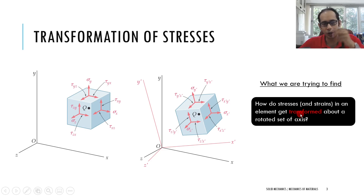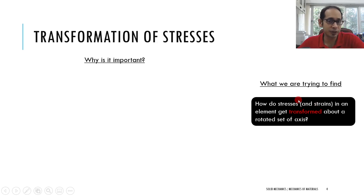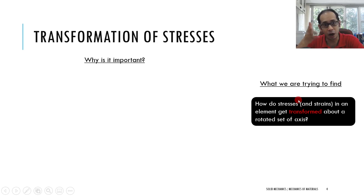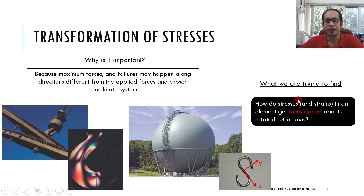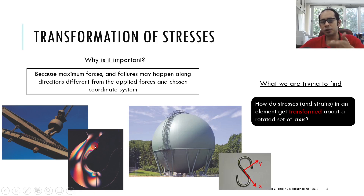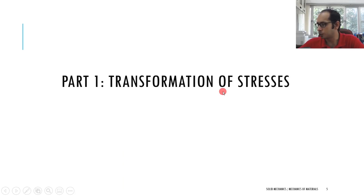Why is it important? For wood, which is weak in shear, even if you pull or push with forces perpendicular to the normal plane, failure may happen at an arbitrary angle. This is true for many structures — depending on the loading, failures may occur at very different planes. Ideally, within a structure you should be able to draw contours of stresses, obtained by transforming stresses at the same point across different sections, to track along which plane the body will fail.